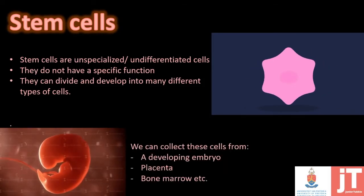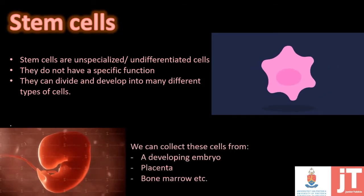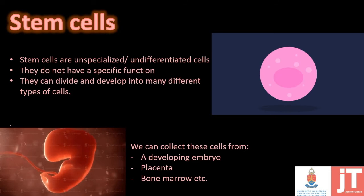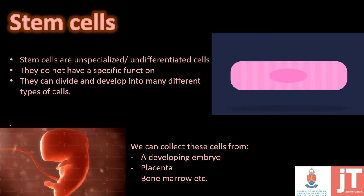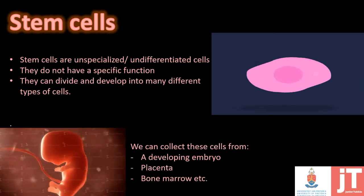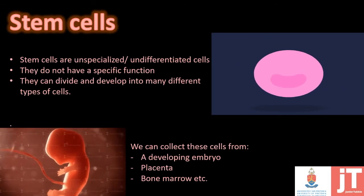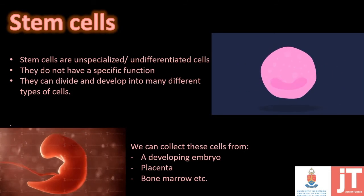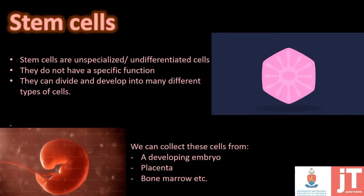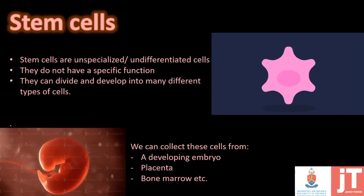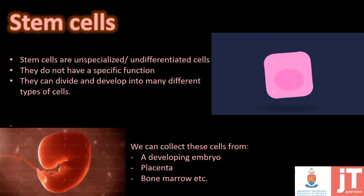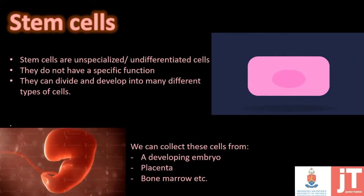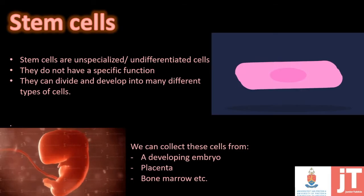We can collect stem cells from a developing embryo, which you will see on the left hand side, also from the placenta — which I will teach you more about when we do reproduction — and then also from bone marrow in adults.